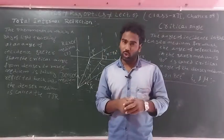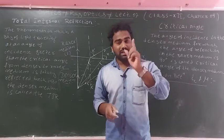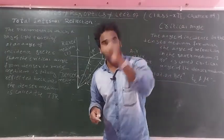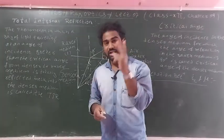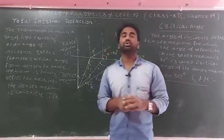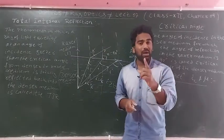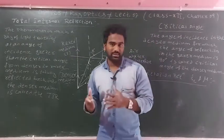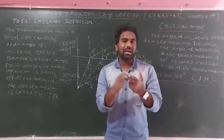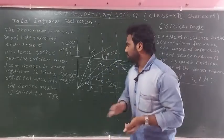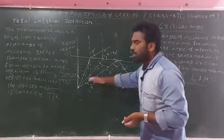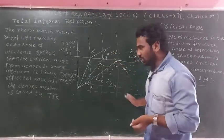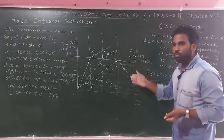There are two conditions for total internal reflection. The first condition is that the ray of light must be traveling from a denser medium to a rarer medium. The second condition is that the angle of incidence must be greater than the critical angle.